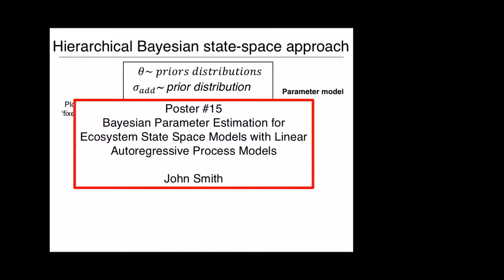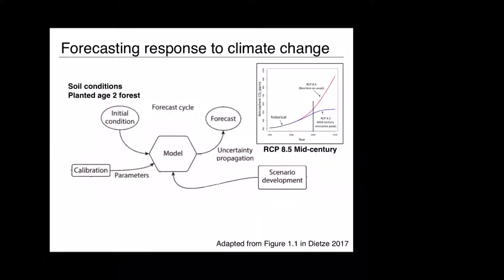I'm not going to get into the details of the hierarchical Bayesian state-space approach that we used — there was a good introduction from Chris's lead-off talk, and I also want to highlight poster 15 from John Smith, a PhD student at Virginia Tech, talking about neat ways of estimating parameters within a state-space model of the kind we used here. You take your state-space model, get your parameters and process uncertainty, and enter a forecast cycle, which produces two kinds of forecasts.